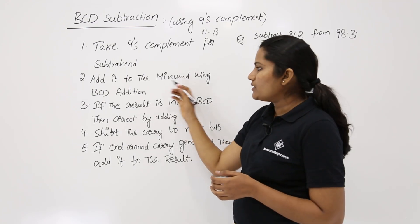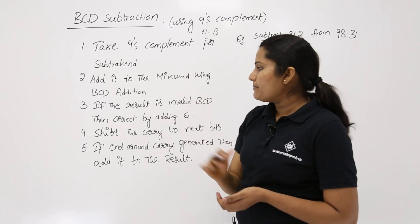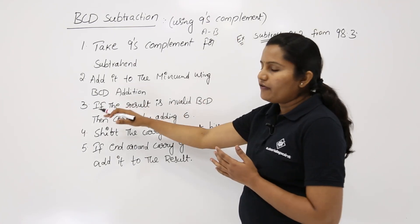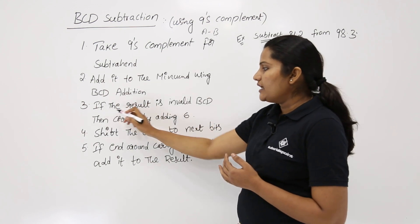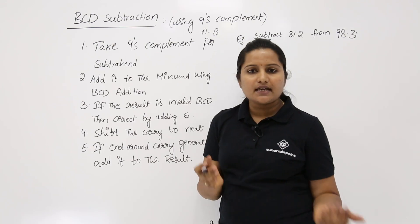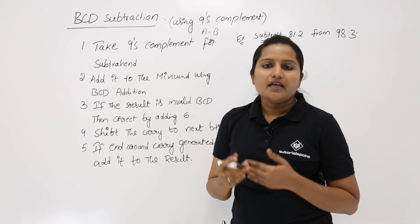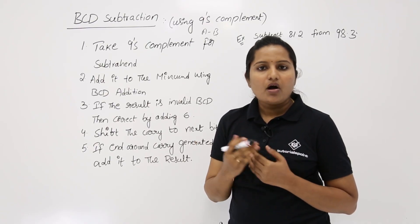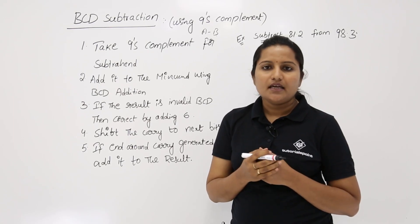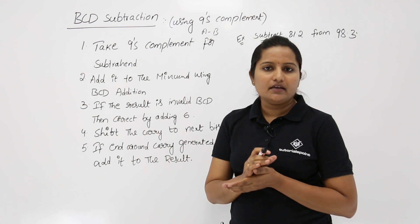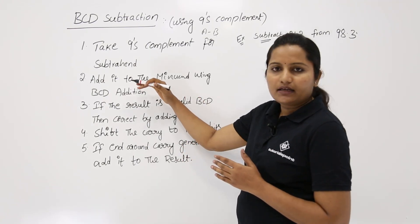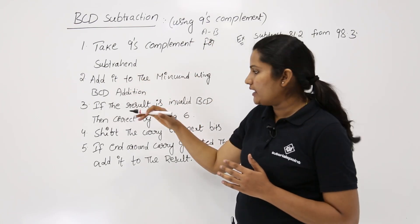The second step is to add it to the minuend. By using BCD addition process, we need to add the 9's complement of B to A. After getting the addition result, you have to check if the result is invalid BCD. Invalid BCD means if the addition sum exceeded 9 or got a carry — that result is said to be invalid BCD. If the result is within the range of 9 or did not get any carry, then that result is said to be valid BCD.